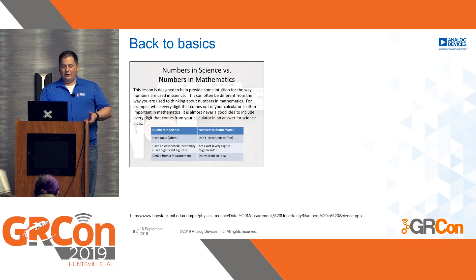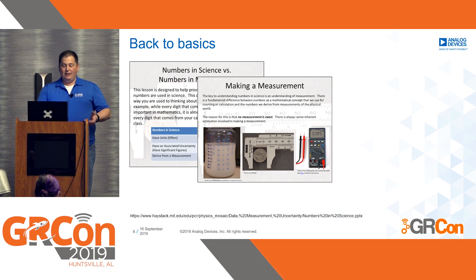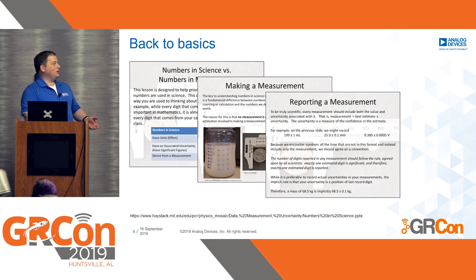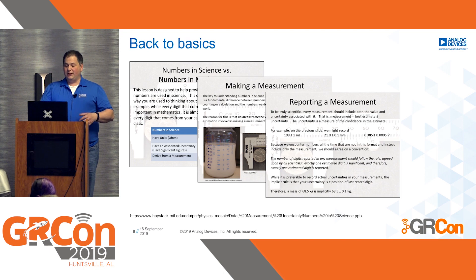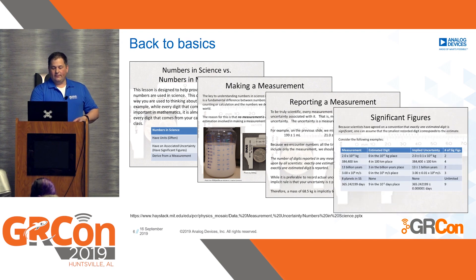Units in science are typically driven from a measurement, whereas numbers in mathematics are driven from concepts or ideas. Making measurements, there's always uncertainty — nothing is exact. Reporting a measurement, engineers and scientists always state the uncertainty: '199 millimeters plus or minus one millimeter.' Significant figures are a big, big issue.